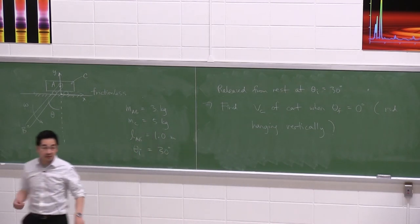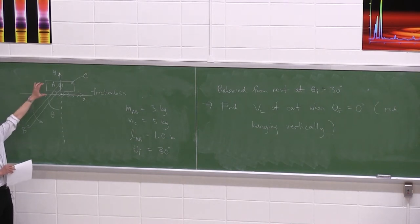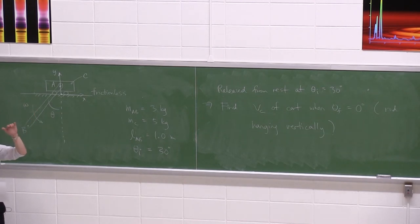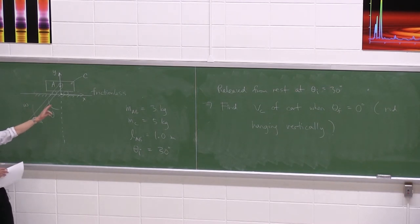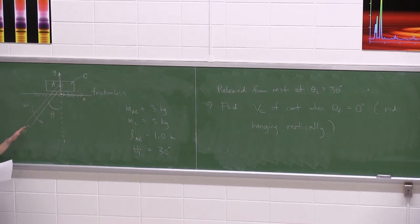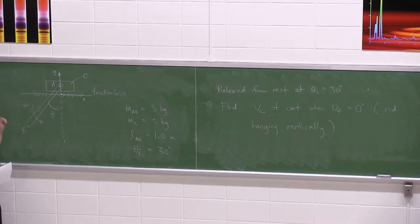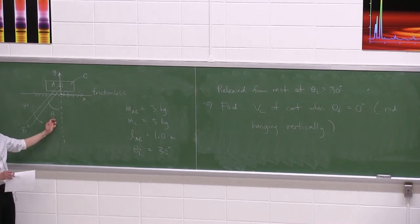Here's the description of the problem. I've got a frictionless surface, really smooth, and a cart C on wheels that is allowed to move horizontally. There's also a slender rod — a rigid body — pinned at the center of cart C at point A, hanging down with length LAB. We're going to lift it up to 30 degrees, hold it still with everything at rest, let go, and find the speed of cart C horizontally when the rod hangs straight down at theta equals zero.